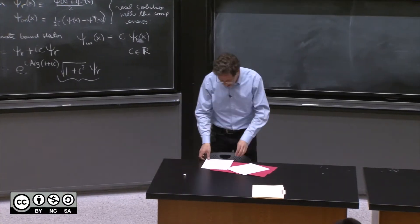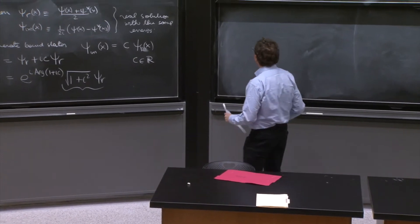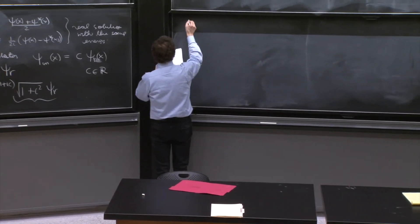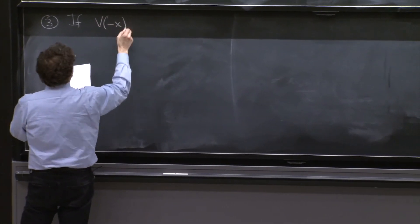Now we prove the other thing that we used in order to solve the square well. So this is property number three.